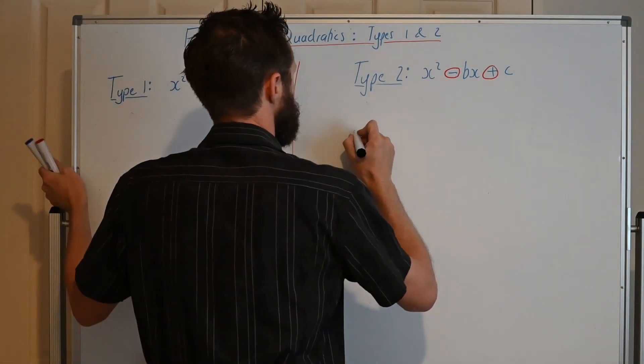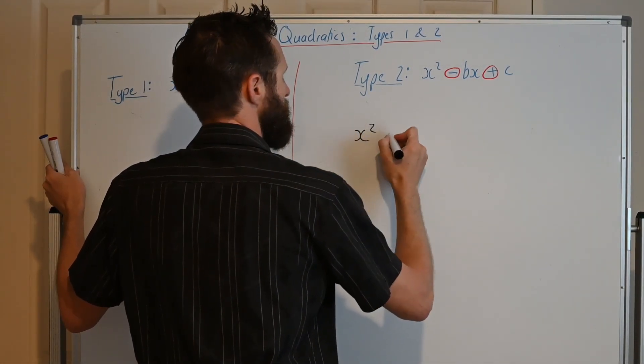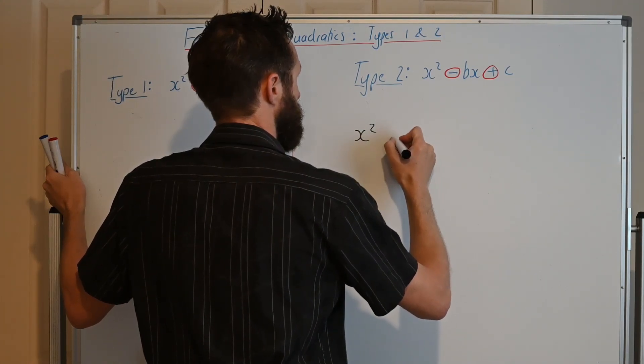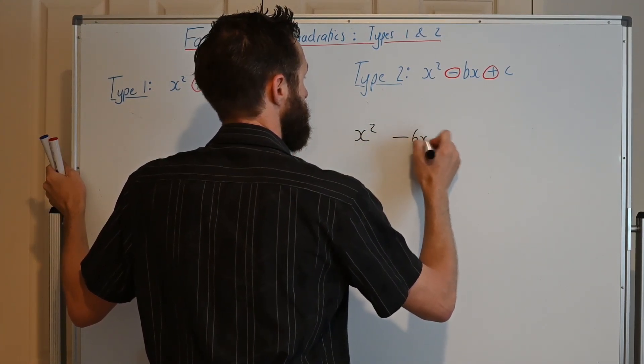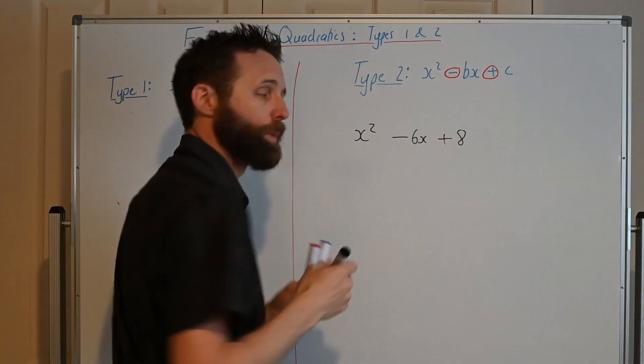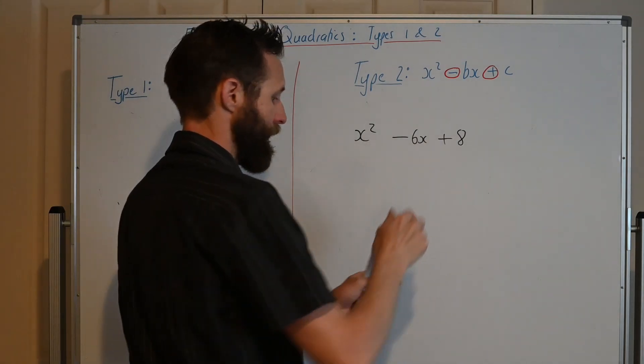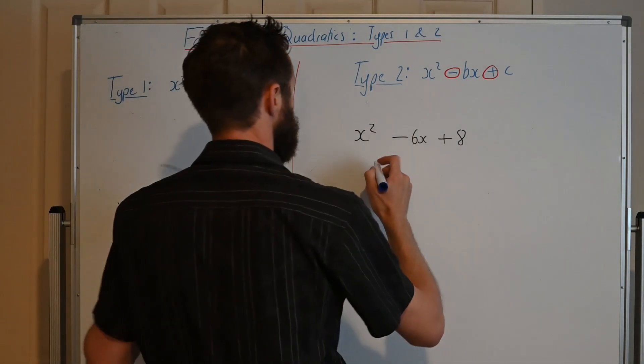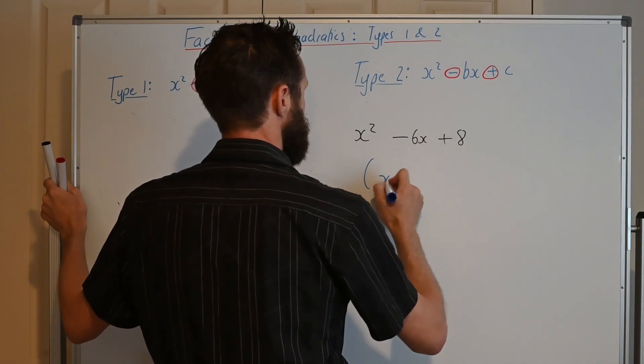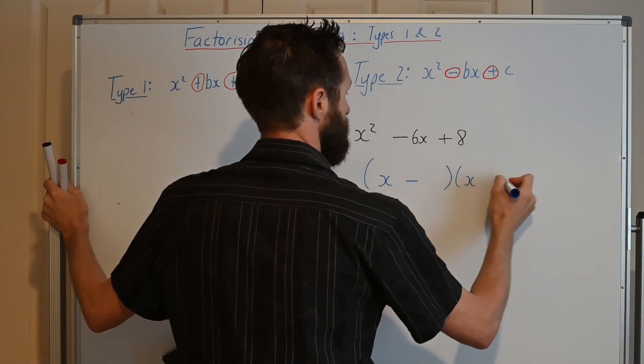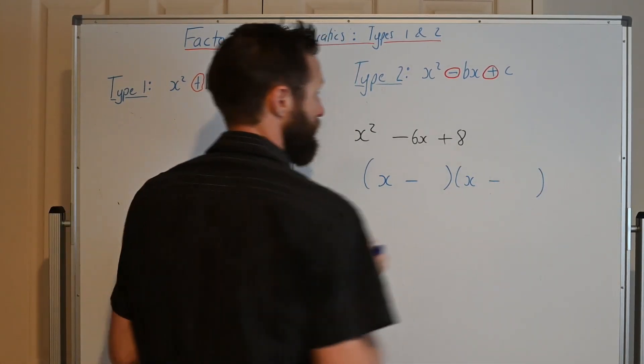Let's say we've got something like this one, x² - 6x + 8. So what we look at, we've got a minus, then a plus, so minus bx plus c. So that tells us straight away that we are going to have a situation where we've got (x - something), and (x - something).